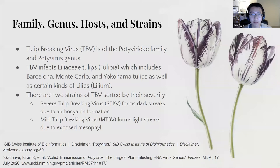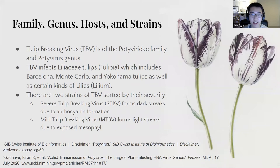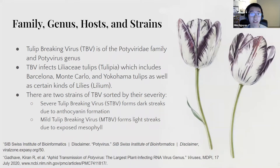The tulip-breaking virus is part of the Potyviridae family and the Potyviridae genus. It infected lily STA tulips, which include the Barcelona, Monte Carlo, and the Bahama tulips, as well as certain kinds of lilies. You can sort the strains of TBV into two groups.